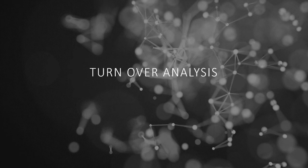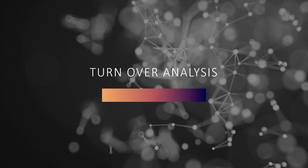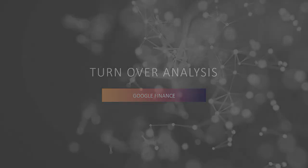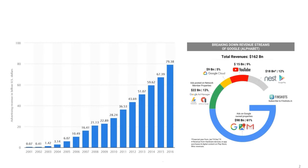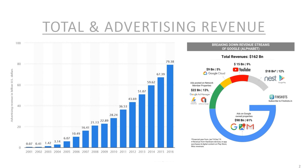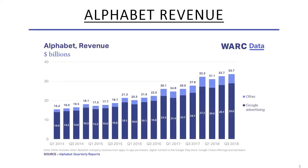Moving on from CSR, we'll cover the turnover analysis — the financial performance of Google. The advertising revenue generated by Google in billion US dollars has been periodically increasing through 2016. The total revenue generated by Alphabet is 162 billion dollars. This graph shows the revenue generated by Google advertising quarterly.